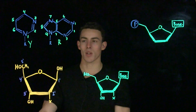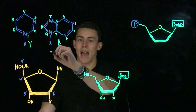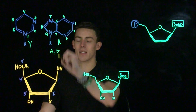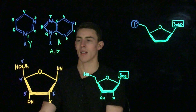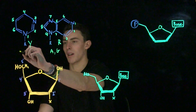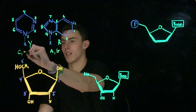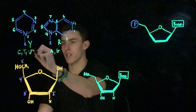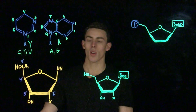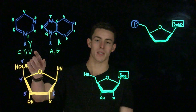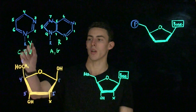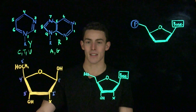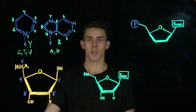The purines we've talked about are adenine and guanine. The pyrimidines are cytosine, thymine, and uracil. Remember that uracil is only present in RNA, whereas thymine is only present in DNA.